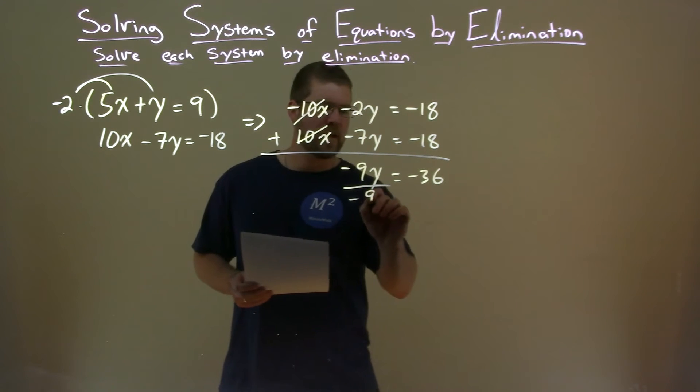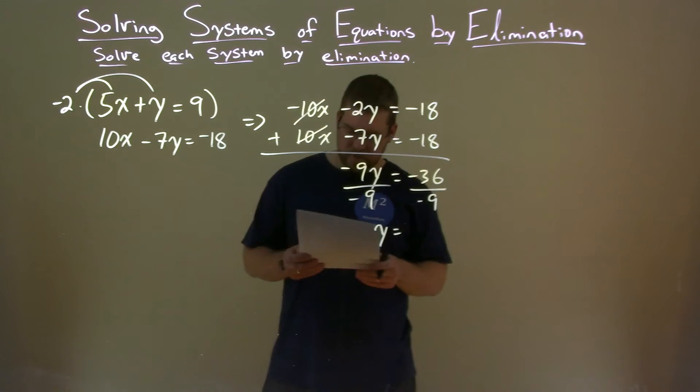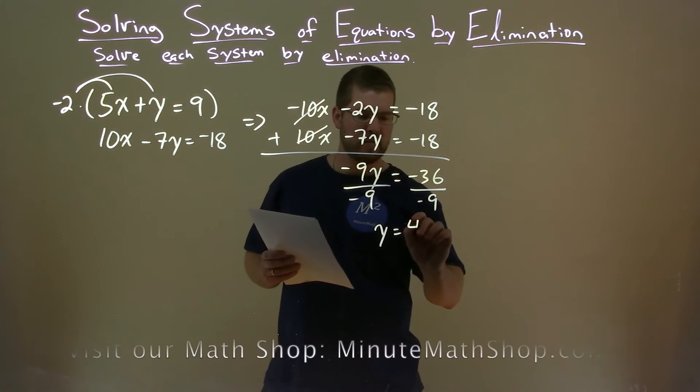Divide both sides by negative 9 to get y by itself. Negative 36 divided by negative 9, two negatives make a positive. So 36 divided by 9 is 4.